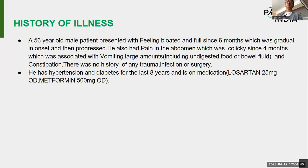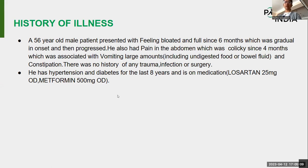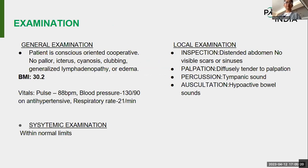A 56-year-old male patient presented with feeling bloated and full since six months, which was gradual in onset and progressed. He also had colicky abdominal pain for four months, associated with vomiting large amounts of undigested food, and constipation. There was no history of any trauma, infection, or surgery. He was a known hypertensive and diabetic for eight years on losartan 25 mg OD and metformin BD.